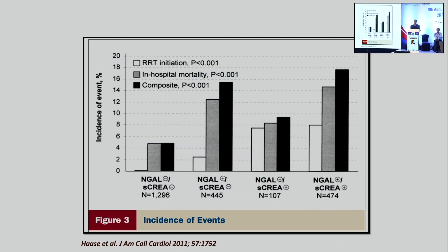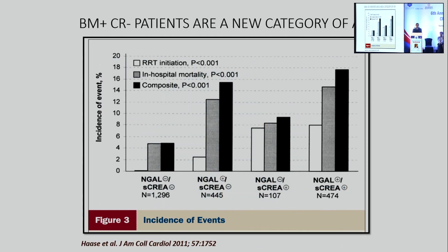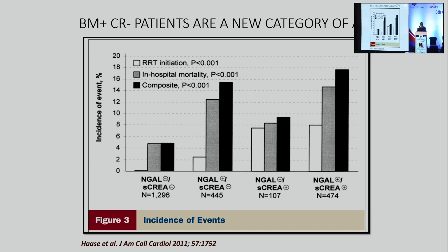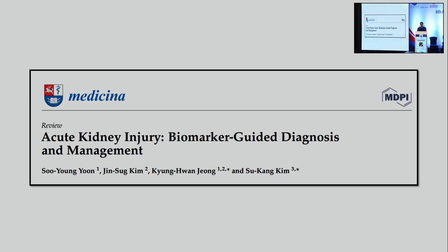We must acknowledge that there is a subset of patients who are biomarker positive and creatinine negative — this is a new category of AKI. A 2011 publication showed that hospital mortality and RRT initiation were significantly higher in patients with biomarker positivity. So biomarker positivity reflects longer hospital stay and need for dialysis — this is the new dimension of AKI diagnosis.